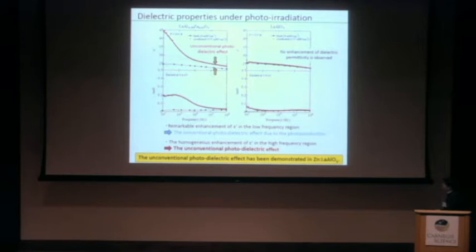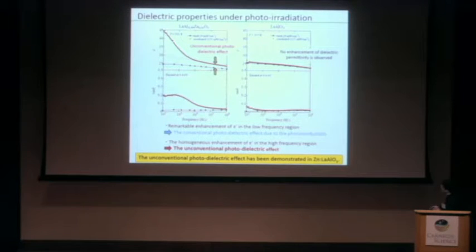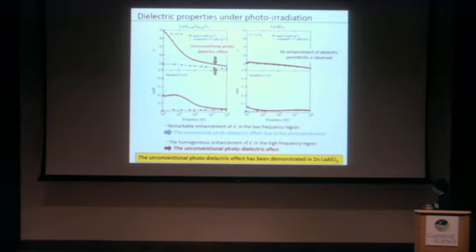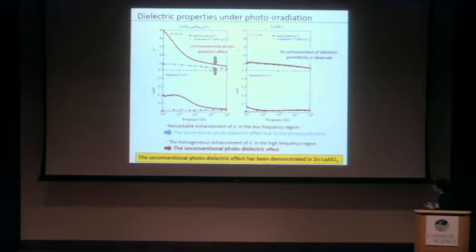This figure shows the frequency dependence of dielectric permittivity and tangent delta in zinc-substituted lanthanum aluminate and pure lanthanum aluminate. The black circles indicate results for the dark state, and red circles indicate results under photo-irradiation. In the low-frequency region, the dielectric permittivity and tangent delta are remarkably enhanced due to photo-irradiation, and a dielectric relaxation is observed. These are conventional photodirected effects due to photo-conduction.